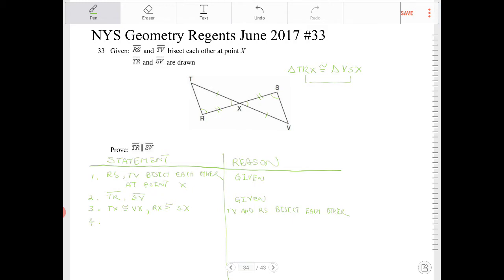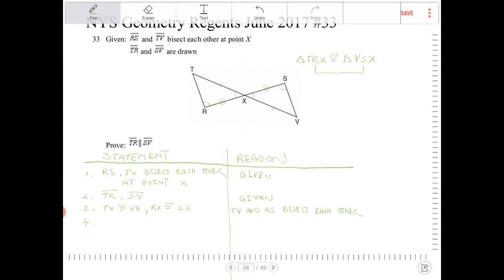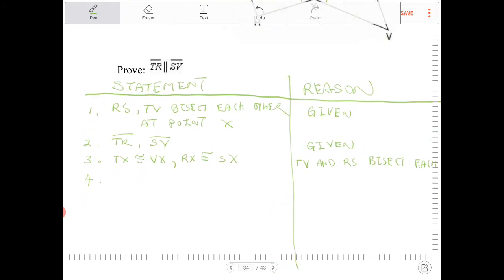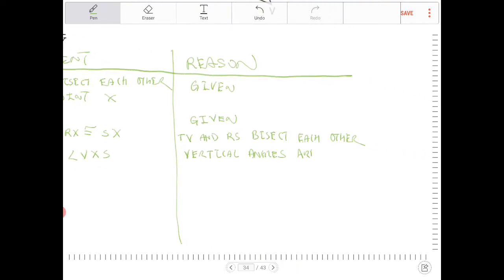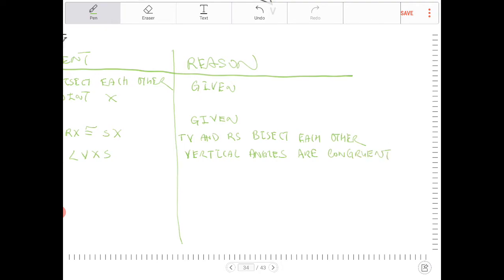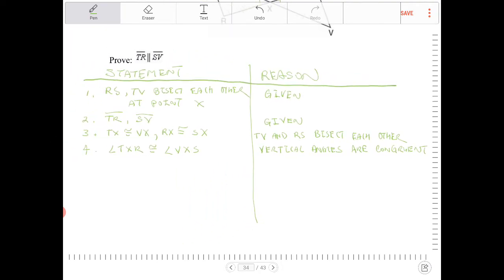Okay. So, and then, since TV and RS, they intersect at X, we're going to form vertical angles. So we're going to say that angle TXR is congruent to angle VXS. And that's because of vertical angles. The vertical angles are congruent.